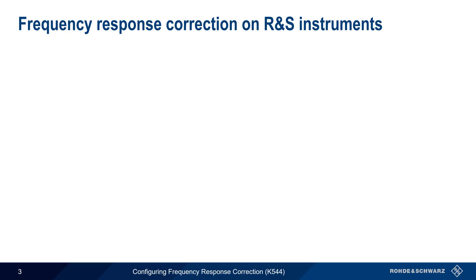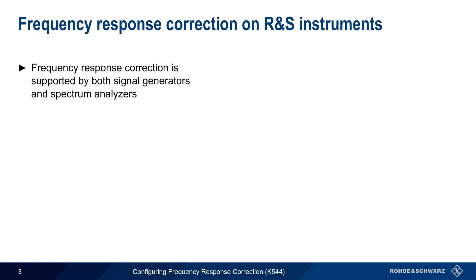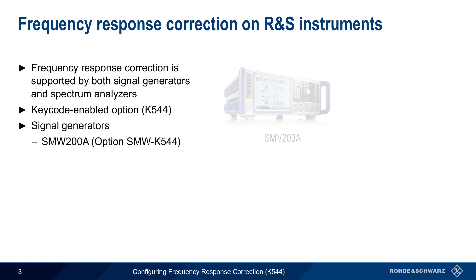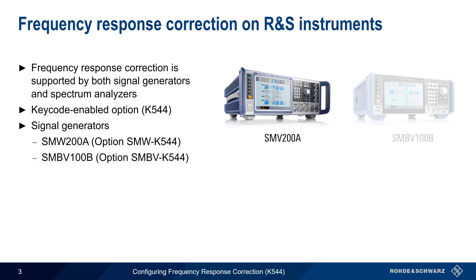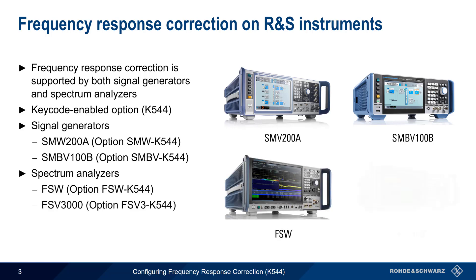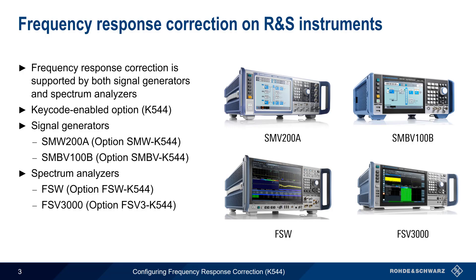Frequency response correction can be implemented on both signal generators and spectrum analyzers. It's a software-only option that's enabled with the K544 key code. On Rohde and Schwarz signal generators, frequency response correction is available on the SMW200A and SMBV100B vector signal generators. And for spectrum analyzers, this option is supported on both the FSW and the FSV3000 family of analyzers.